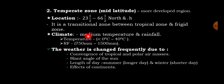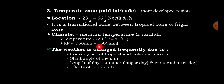The climate has medium or moderate temperature and rainfall. Temperature ranges from less than zero degrees Celsius, near the Arctic or Antarctic Circle, to 40 degrees Celsius near the Tropic of Cancer and Tropic of Capricorn. Rainfall ranges from 750 to 1500 millimeters. The weather changes frequently due to convergence of tropical and polar air masses, the slant angle of the sun, length of day, and the effect of continents.